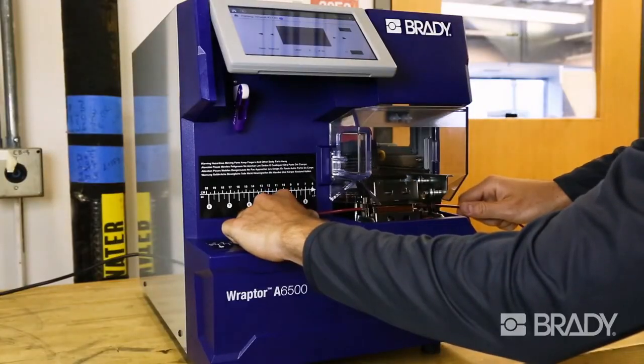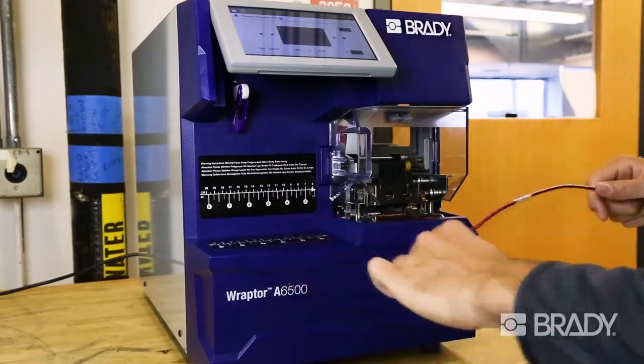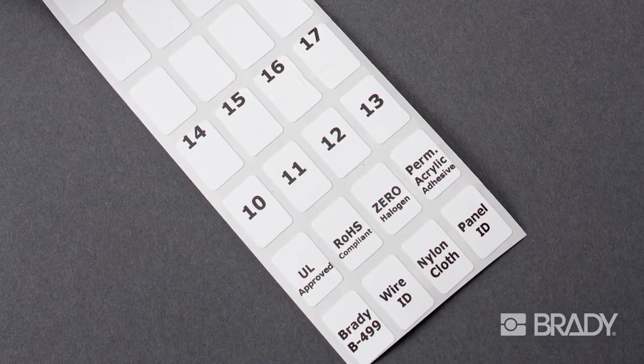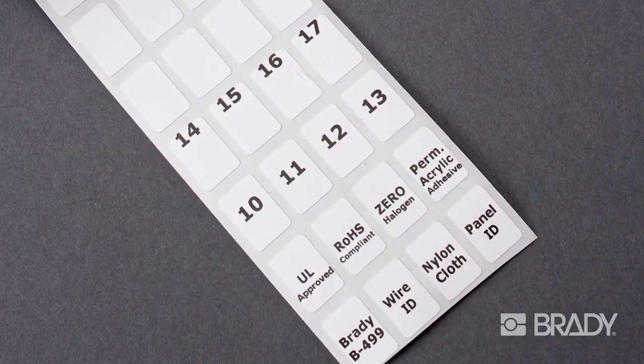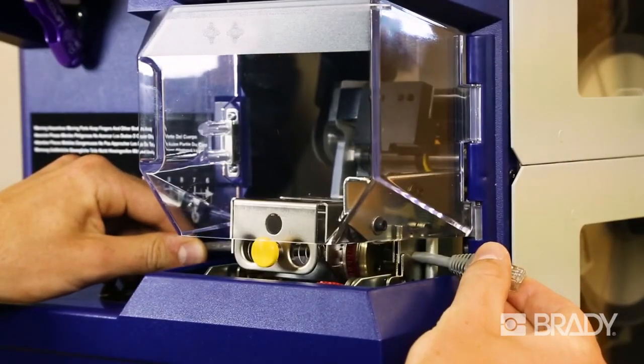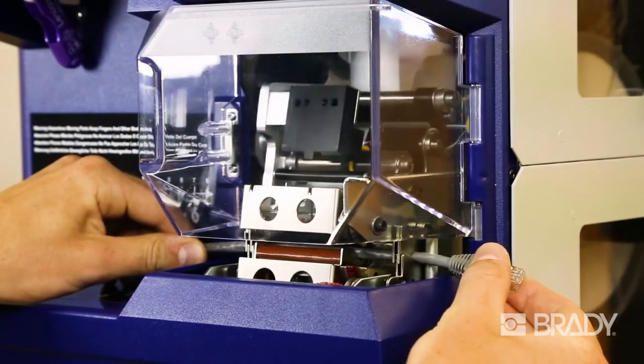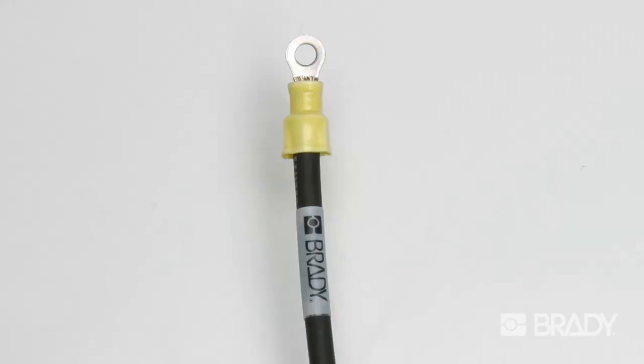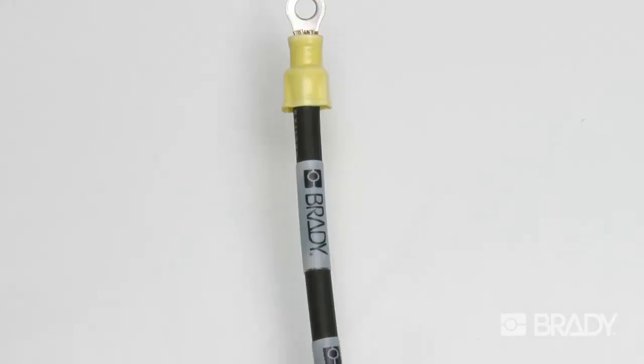And with the Raptor A6500, there's less label waste. In pre-printed batch jobs, extra labels are thrown away. With Raptor A6500, there's no pre-printing. Labels are printed and applied as you need them. You get the labels you need, and only the labels you need.